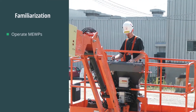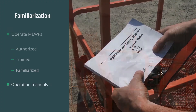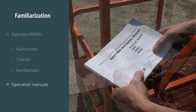Operators can only operate MOOPs that they are authorized, trained, and have been familiarized to operate. Familiarization must occur with each unit that will be operated prior to use, during training, and inspection. Operators must be familiar with where the operation manuals are stored on the device, so they can be used as a reference for familiarization.